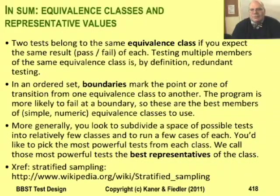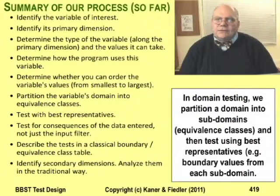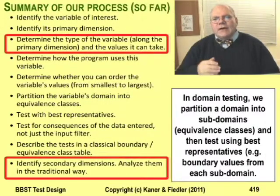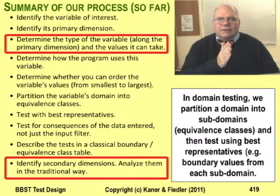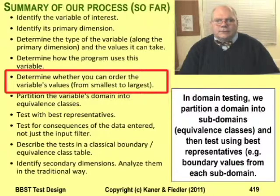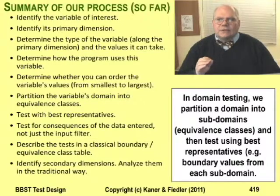We've covered a lot more ground, so I'm going to pause again to sum up. This slide collects my definitions of equivalence classes, boundaries, and best representatives, plus an expanded description of the domain testing process. Compared to the last summary, I've added a distinction between primary and secondary dimensions and another distinction between ordered and unordered variables. We're still considering relationships between risk and domain testing, and we're about to start considering multidimensional or multivariable domains.